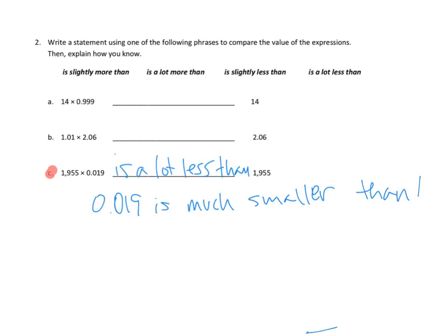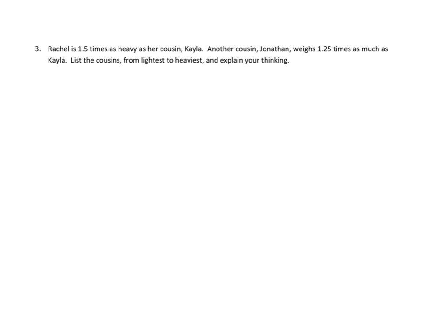Awesome. Let's look at one more problem on this homework. Problem number three. This is a story problem. So we're going to use our read, draw, and write strategy. I know first up is reading. Rachel is 1.5 or 1 and 5 tenths times as heavy as her cousin, Kayla. Another cousin, Jonathan, weighs 1.25 times as much as Kayla. List the cousins from lightest to heaviest and explain your thinking. In cases like this, where we're looking at the relative weights of people, I like to use tape diagrams.